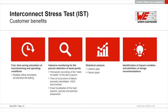It also enables intensive monitoring for the precise detection of weak points. Because the state of the coupons is permanently recorded, you get exact data about which component or coupon failed. The daisy-chain design of the coupons makes it very easy to use thermal cameras to find hot spots and thus the weak spot in the coupon.